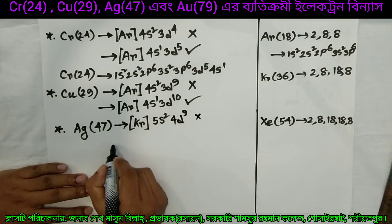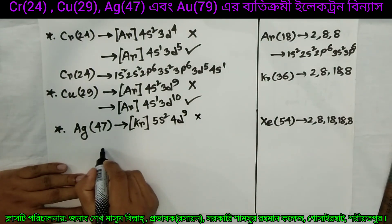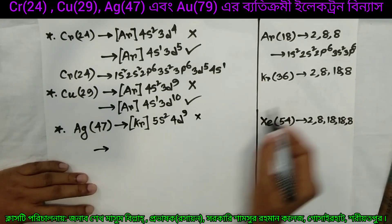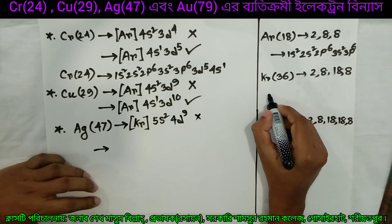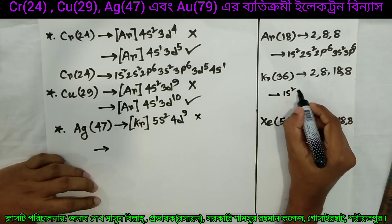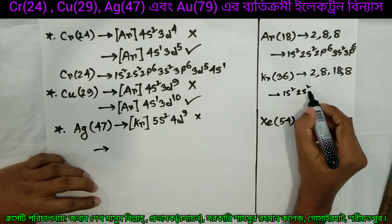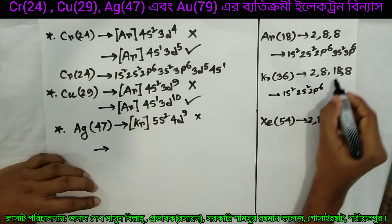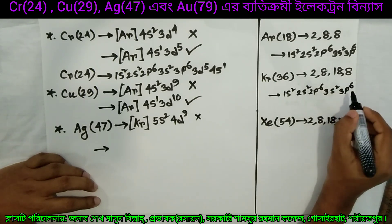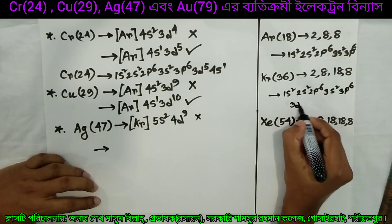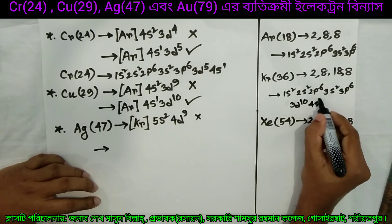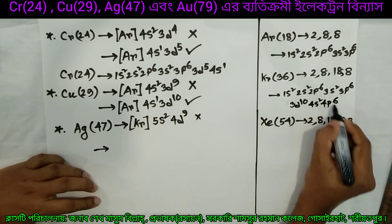Krypton's full configuration is: 1s2, 2s2, 2p6, 3s2, 3p6, 3d10, 4s2, 4p6.